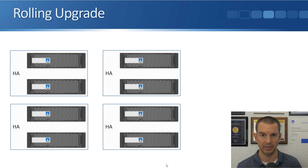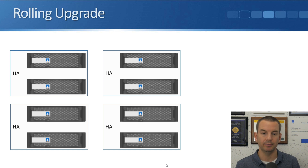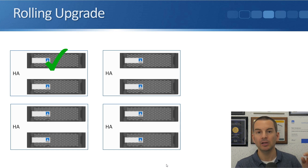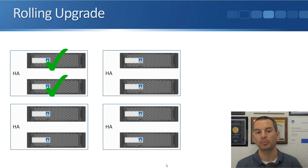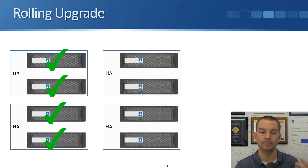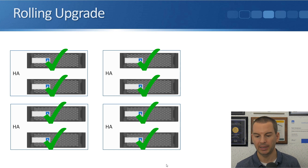With a rolling upgrade, using an eight-node cluster made up of four HA pairs as an example: we upgrade node one first. While that is happening, node two — its HA partner — takes control of its storage. When node one is done, then node two is upgraded, and node one takes care of its storage during that time. Once both are done, nodes one and two return to normal. We then repeat that process on nodes three and four, five and six, seven and eight — one at a time in sequence.